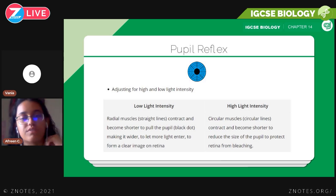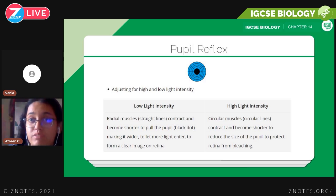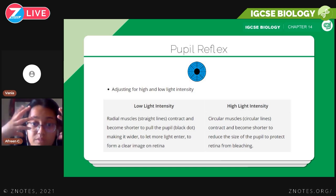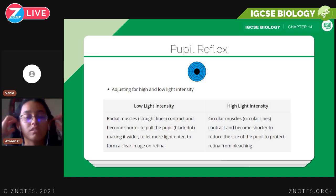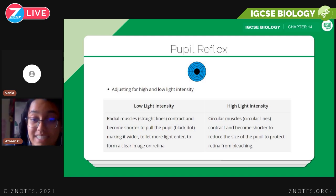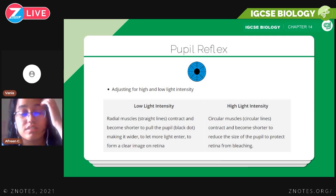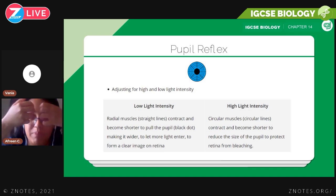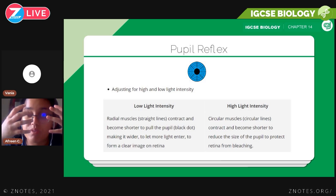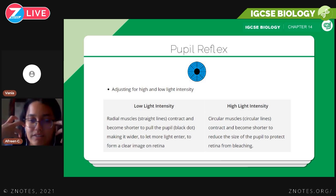Now we have the pupil reflex. When you're in a bright room, your pupils get smaller; when you're in a dark room, your pupils get bigger so that more light enters and you can see in the dark. The function of the pupil reflex is to adjust your eyes for high or low light intensity. When light intensity is low, the radial muscles — the straight lines — contract to become shorter, pulling the pupil to become bigger so the diameter increases and more light enters.